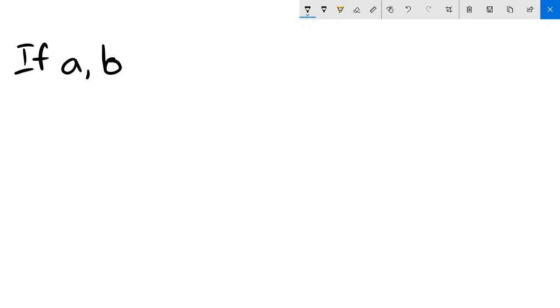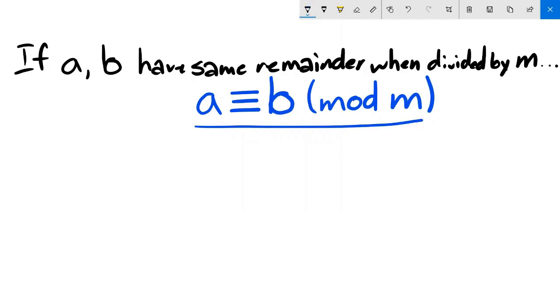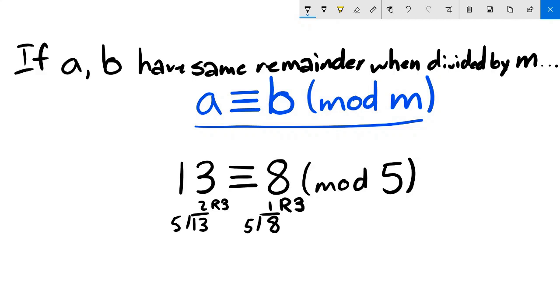Here's the most important definition. If two integers a and b have the same remainder when divided by an integer m, we write: a is congruent to b mod m. For example, 13 is congruent to 8 mod 5 because the remainder of 13 divided by 5 is 3, and the remainder of 8 divided by 5 is also 3.